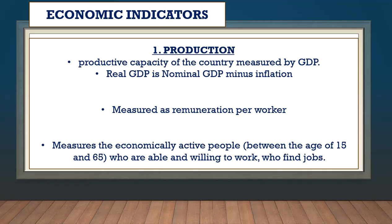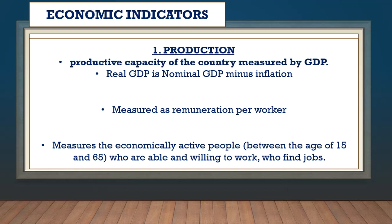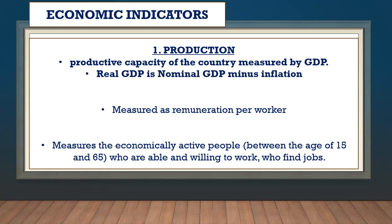The first economic indicator is the production indicator. Production has to do with productive capacity — how much is being produced — and this is measured by GDP. Real GDP is calculated by taking the nominal GDP, or normal GDP, and removing inflation.